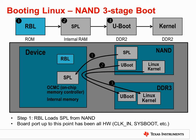Here we see the boot process in more detail. We show the device booting from NAND flash. In the first step, the ROM bootloader loads the secondary program loader from NAND flash into the internal memory of the device. In the second step, the SPL loads uBoot into the external memory of the device. And in the third and final step, uBoot loads the Linux kernel into external memory.